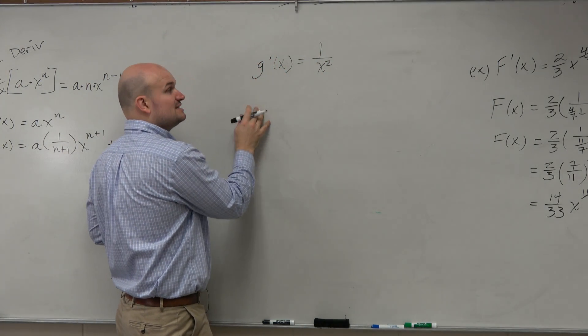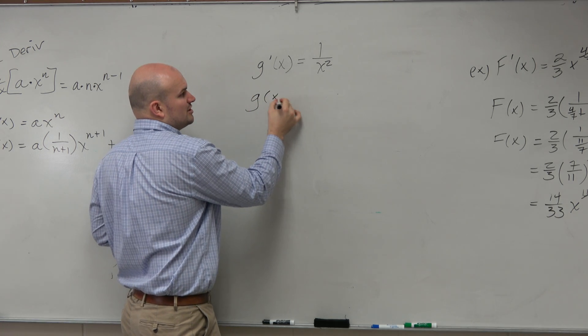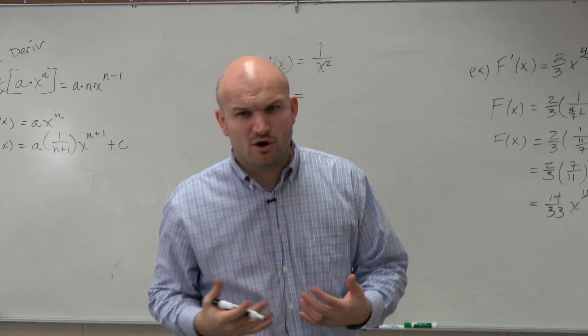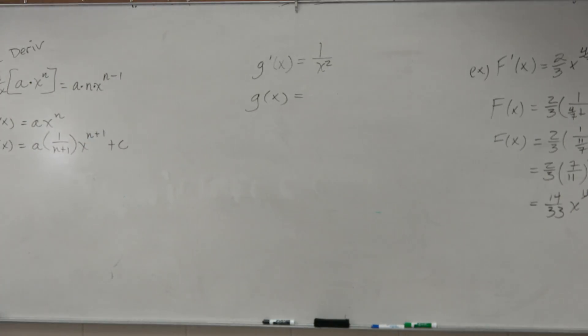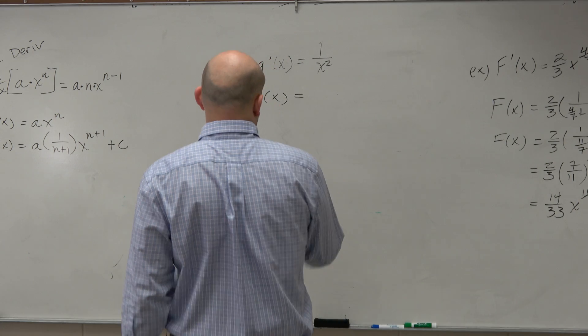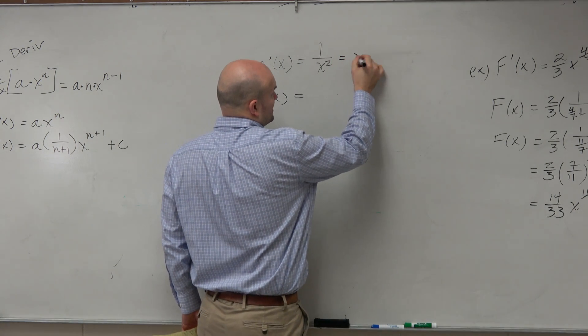All right, so again guys, if we're looking for this antiderivative, the antiderivative is just going to be g of x, right? But before I really even do that, if I know that I'm going to be using this power rule kind of formulation, I probably would want to rewrite this as x to the negative 2.